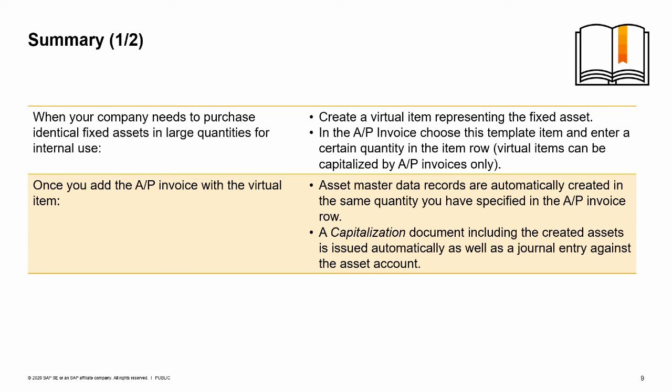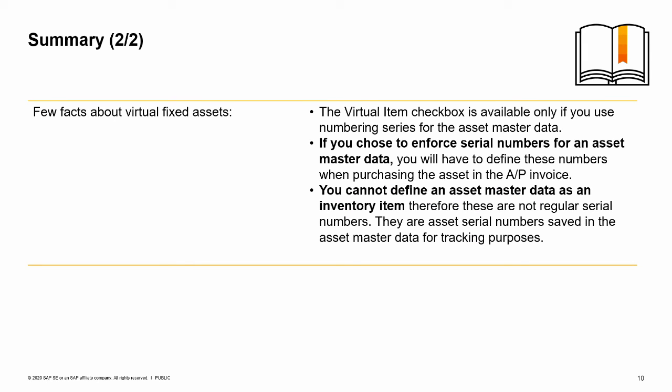To summarize: when your company needs to purchase identical fixed assets in large quantities, create a virtual item and use it in the AP invoice. Virtual items can be capitalized by AP invoices only, and asset master data records are automatically created in the quantity specified. A capitalization document and journal entry are issued automatically. The virtual item checkbox requires numbering series for the asset master data. If you enforce serial numbers, you must define them in the AP invoice; these are asset serial numbers for tracking purposes, not regular inventory serial numbers. You have completed the Virtual Fixed Asset topic. Thank you for your time.